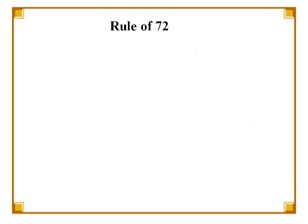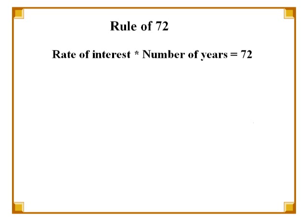You may have noticed in all of these examples, the product of the rate of interest with the number of years equals 72. This is actually postulated in a very important rule in finance called the Rule of 72. The Rule of 72 allows us to calculate approximately how soon we are likely to double our money.